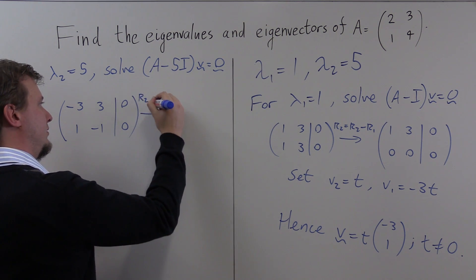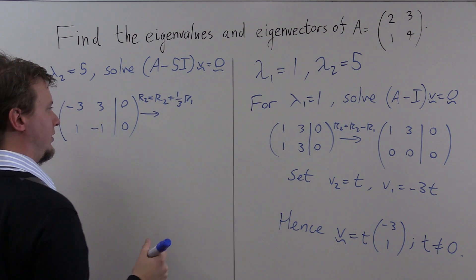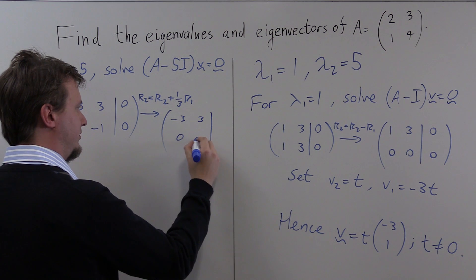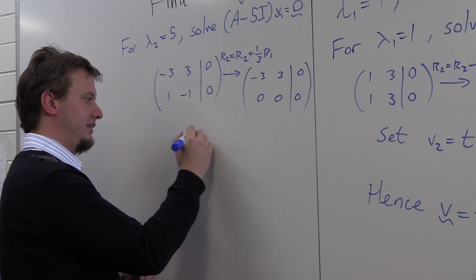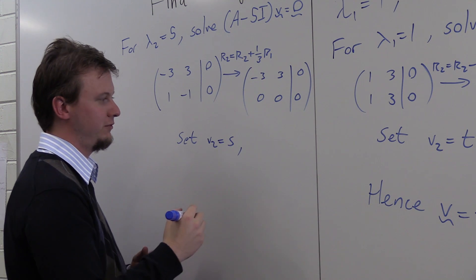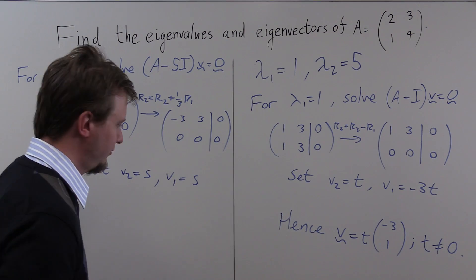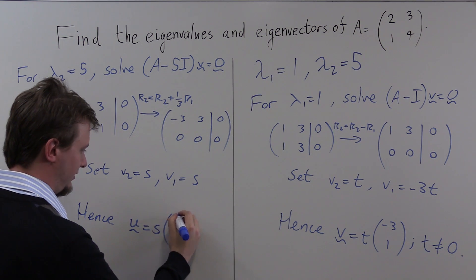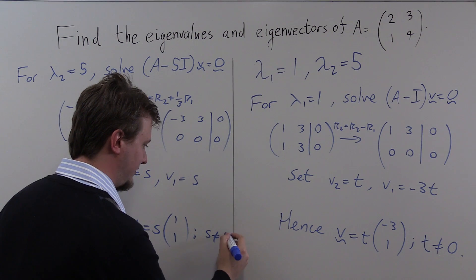We do one row reduction: row 2 becomes row 2 plus one-third of row 1, giving the matrix −3, 3, 0, 0, augmented with 0, 0. Back substituting, we set v₂ equal to a parameter s. Solving for the first component gives v₁ equal to s as well. So the second eigenvector is s times the vector (1, 1), with s nonzero.